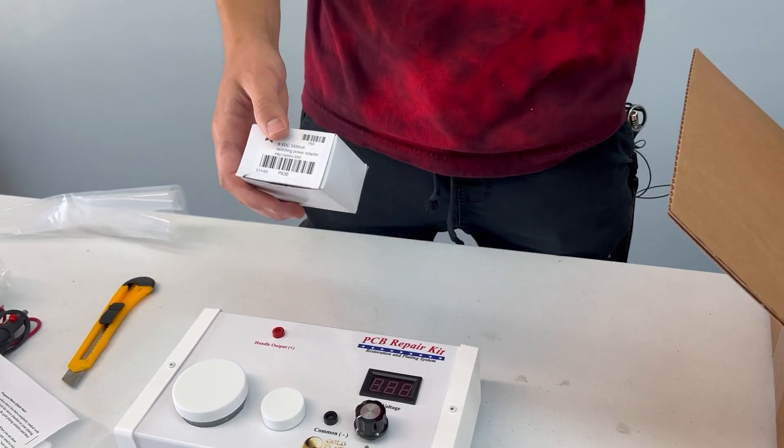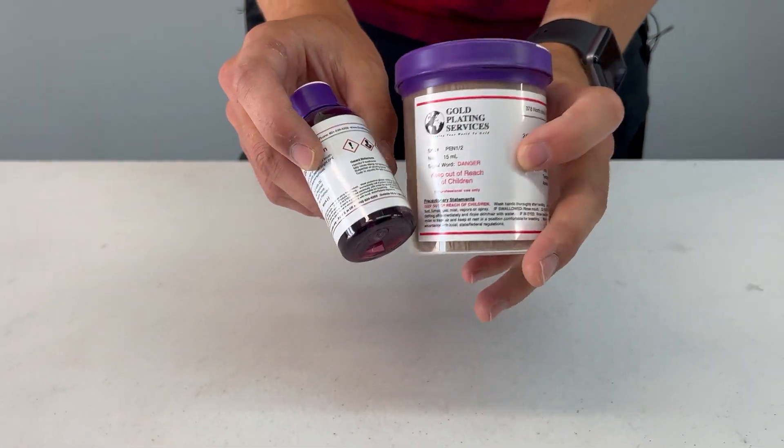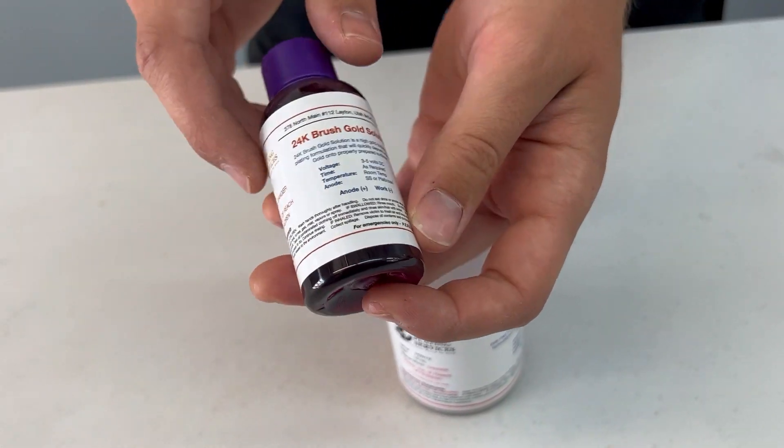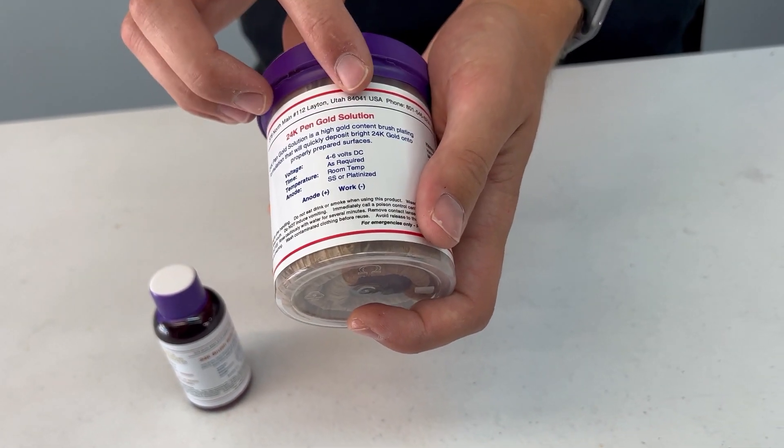We have a nine volt power supply and our safety equipment. So we just opened up our golds. This is our two ounce 24k brush gold solution, and then we have this jar which is our 24k pen gold solution. This is a half ounce of gold.